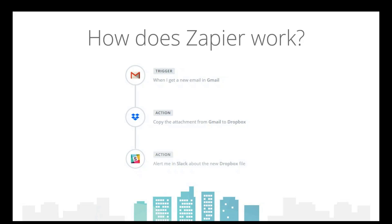A task is a single action performed by Zapier. If your Zap is to create new Google contacts every time a contact is created, that is one task. This is important when choosing your Zapier plan because different plans have different limits. Reckon One is a free plan — we did all the work in Zapier ourselves, so there are no restrictions around creating integrations into Reckon One. However, there are limitations around the number of tasks per month and the number of actions, which we'll cover more later.